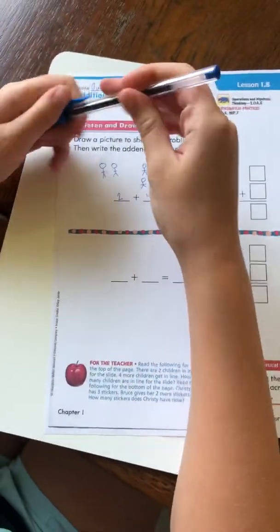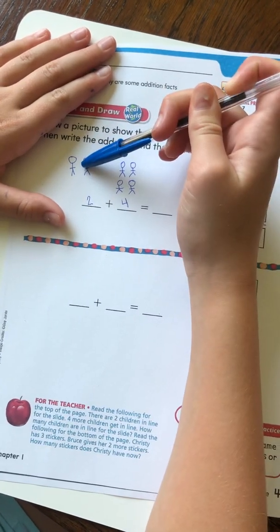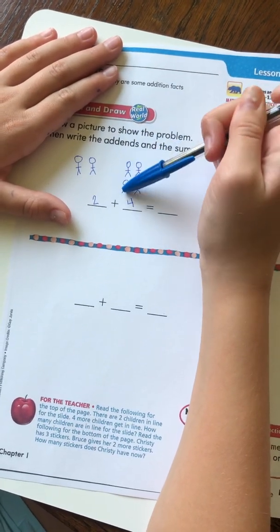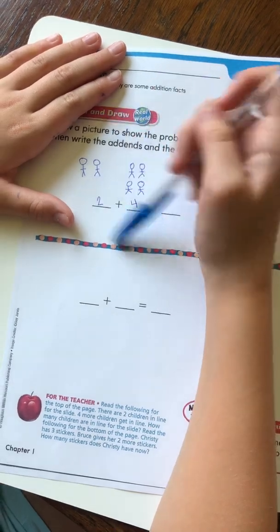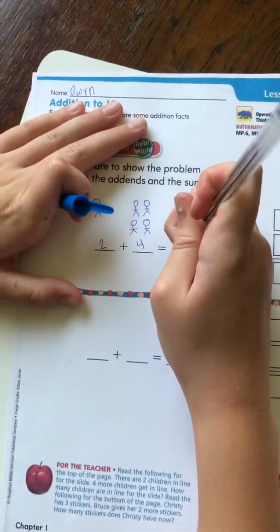Four more people come. So, if I want to add these, I could try counting. So I could do one, two, which are the first two, three, four, five, six, which are the last four. So this, four plus two equals six.